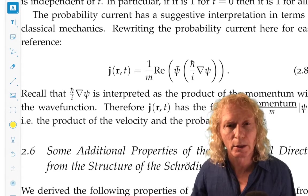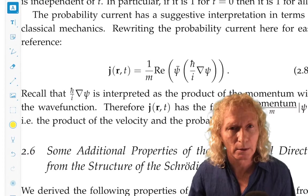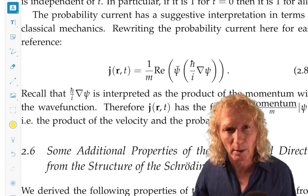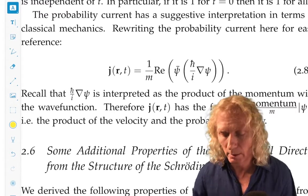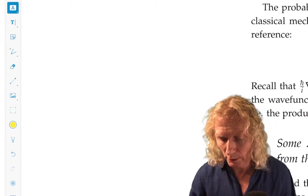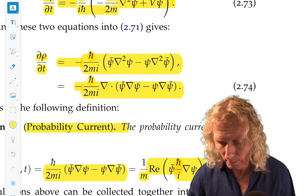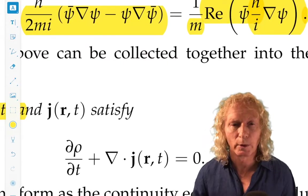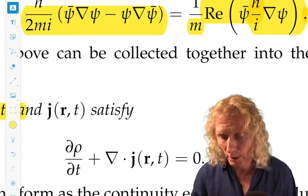But understanding where the probability current came from and how it relates to conservation of probability through that partial differential equation on the previous page, this continuity-like equation, that's the most important thing, and we're going to use that in this chapter.